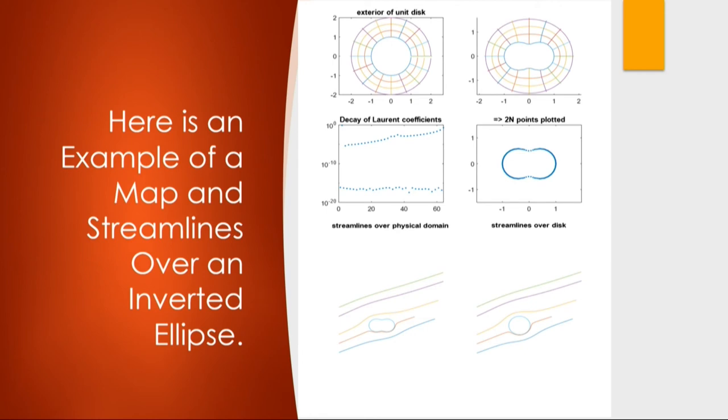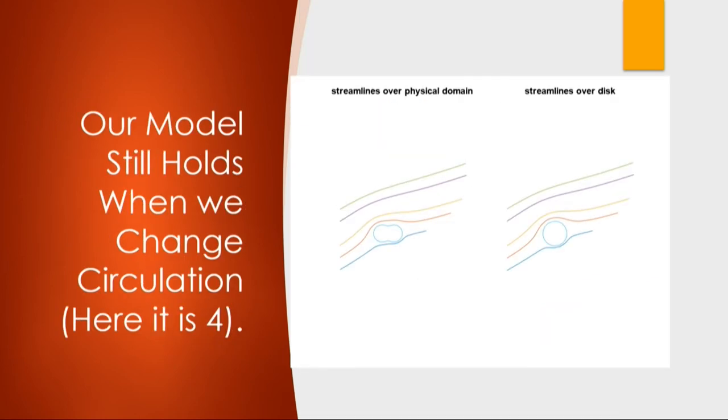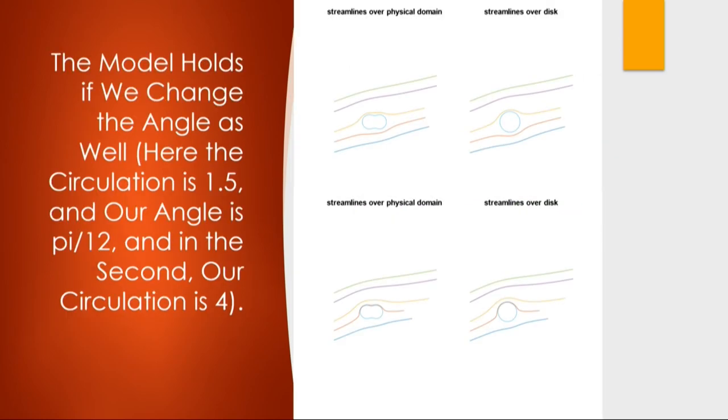So adding onto that, here's an example of an inverted ellipse. And this shows that we can actually perform this method on an inverted ellipse. And as you can see, when we change the circulation, this model still works. If you change the angle of attack in the circulation, it still works. So this is a good thing.